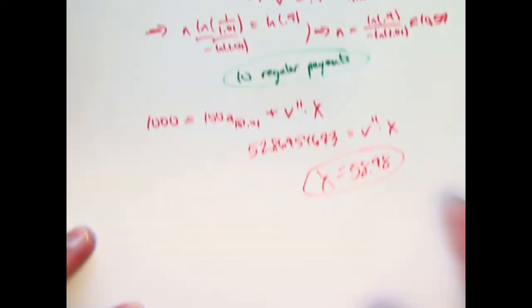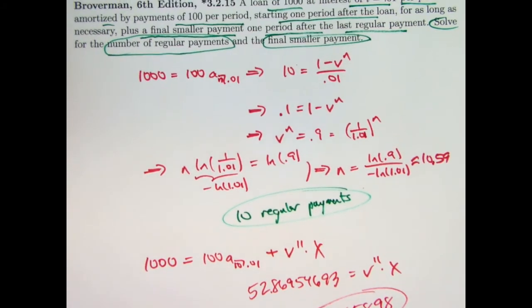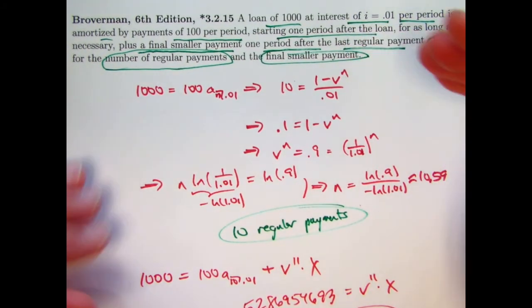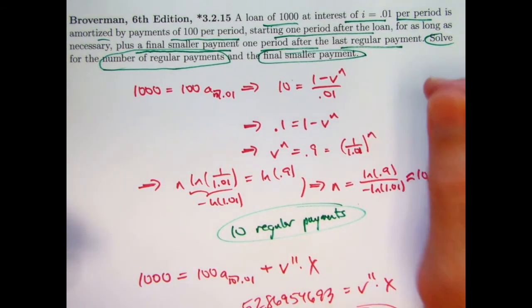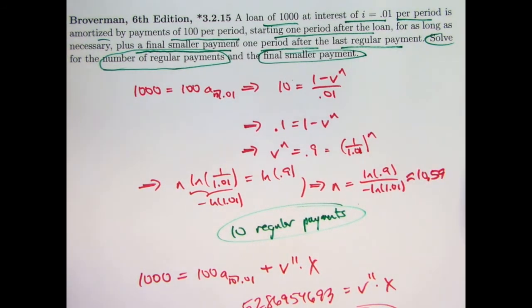I would encourage you to check this out by maybe making an amortization table. Actually, the book's directions added make an amortization table, but I wanted to solve it this way. But I would encourage you to check that out by making an amortization table and maybe even on a spreadsheet, and you'll see how this works out nicely.